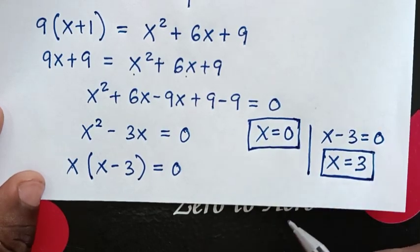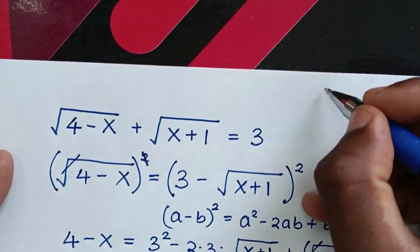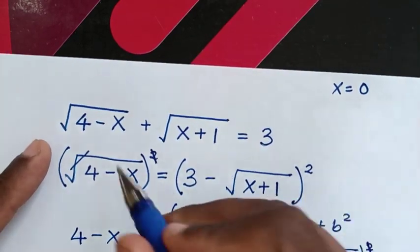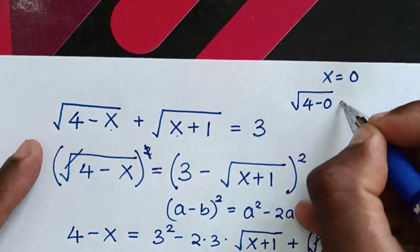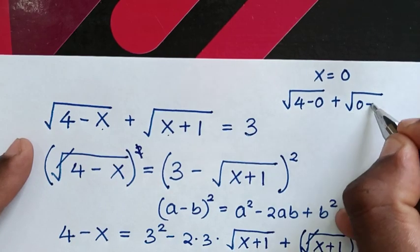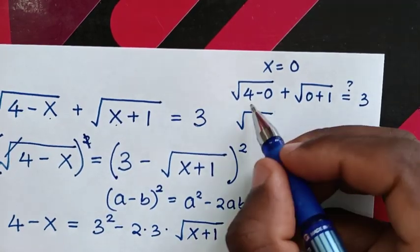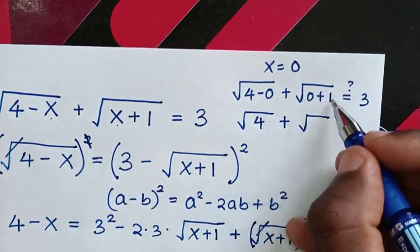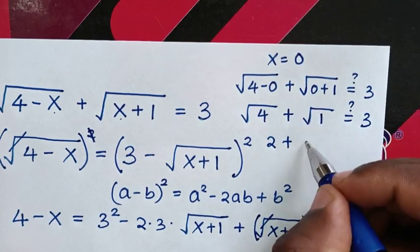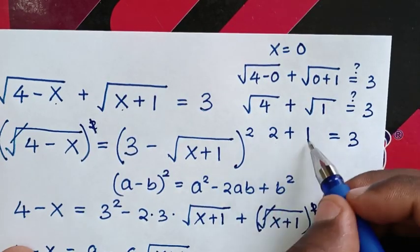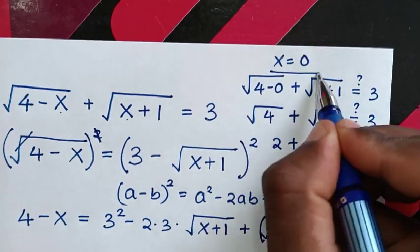Now let's check whether x equals 0 is correct. Substituting x equals 0 into the original equation: square root of (4 minus 0) plus square root of (0 plus 1) equals square root of 4 plus square root of 1, which is 2 plus 1, equals 3. The left side equals the right side, so x equals 0 is confirmed.